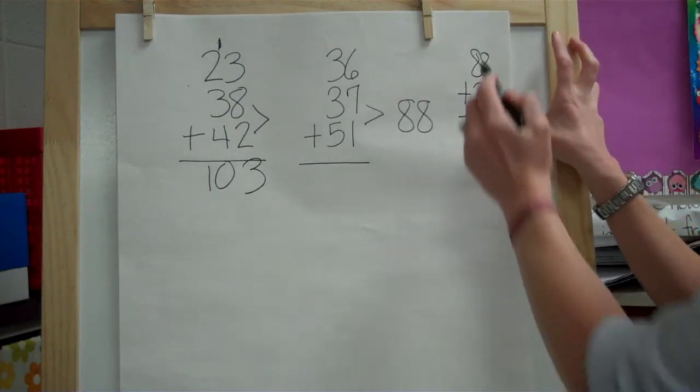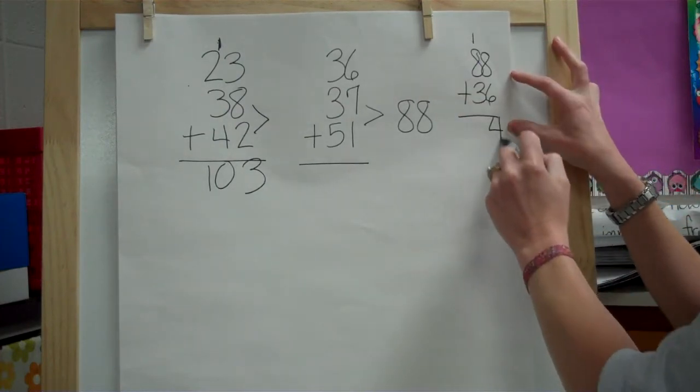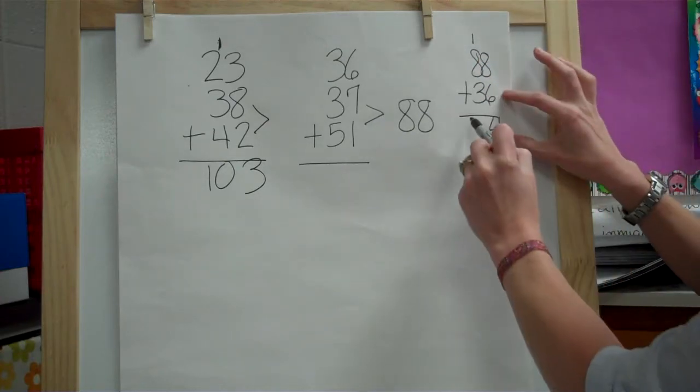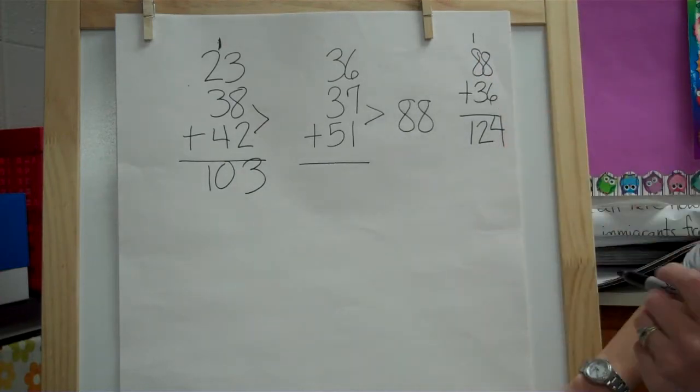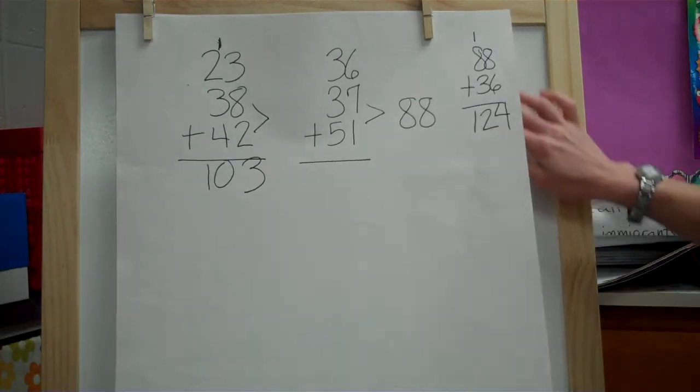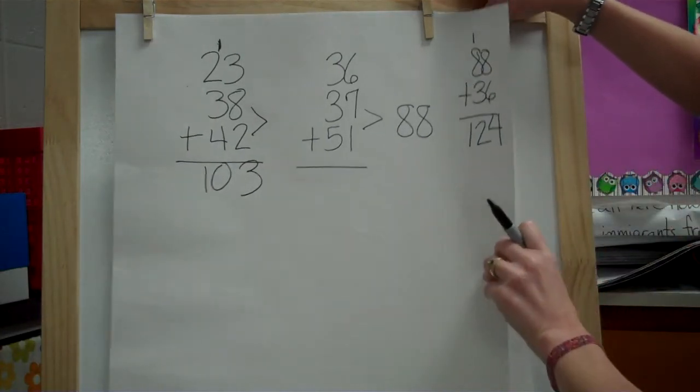And so then I can take 88 and add that to 36. 8 plus 6 we know is 14, and then 8 and 3 and 1 would be 12. So that's another way to use those properties to add.